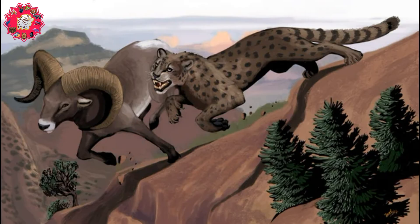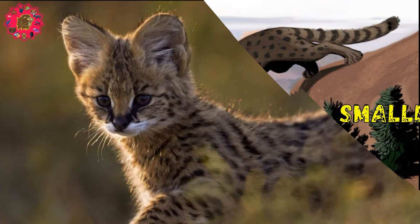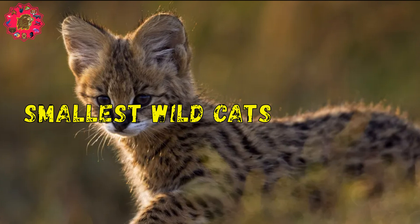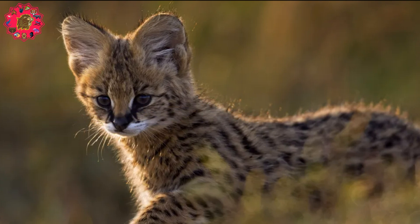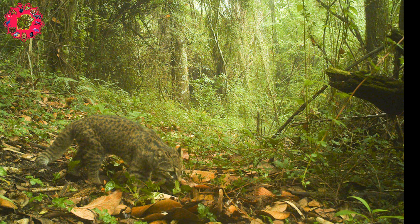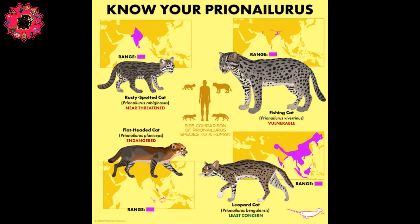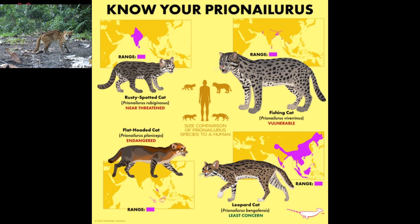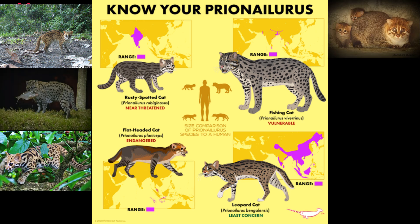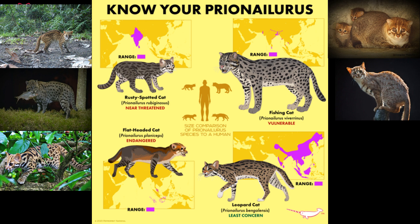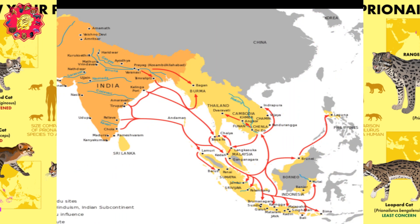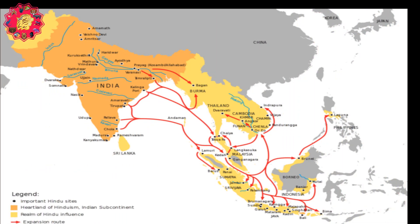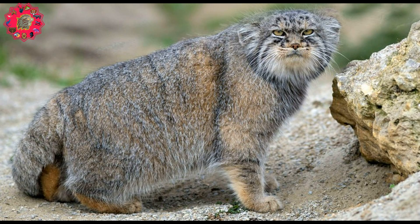The cheetah's lack of retractable claws helps it maintain traction while running at high speeds. The sixth lineage contains some of the smallest wild cat species, diverging 6.2 million years ago. These are listed under the genus Prionailurus, containing the Sunda leopard cat, the fishing cat, the leopard cat, the flat-headed cat, and the rusty-spotted cat, the smallest wild cat in the world. These cats are found all over South and Southeast Asia. Additionally, this branch contains the Pallas's cat under the genus Otocolobus, found throughout Central Asia.